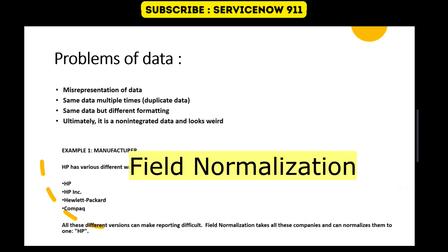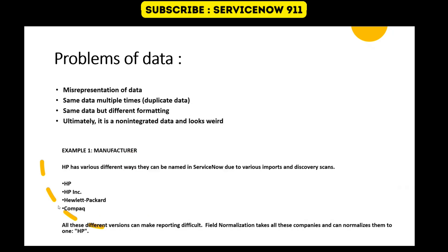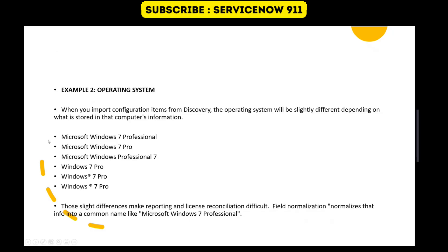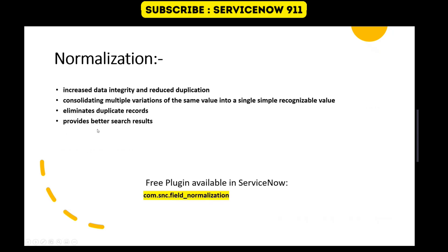So how to overcome this? To overcome this, we have field normalization. In that, we have to identify all these types of sub-names and then come up with a normalized name, a normalized value. Here we have set the normalized value to 'HP,' so whenever the data comes in as HP, HP Inc, or Compaq, it will replace it with 'HP' so that the system looks integrated and standard. In the same way, if the data is coming with any of these operating system names, we normalize the name to 'Microsoft Windows 7 Professional.' Along with that, it will help you in better reporting and better configurations.